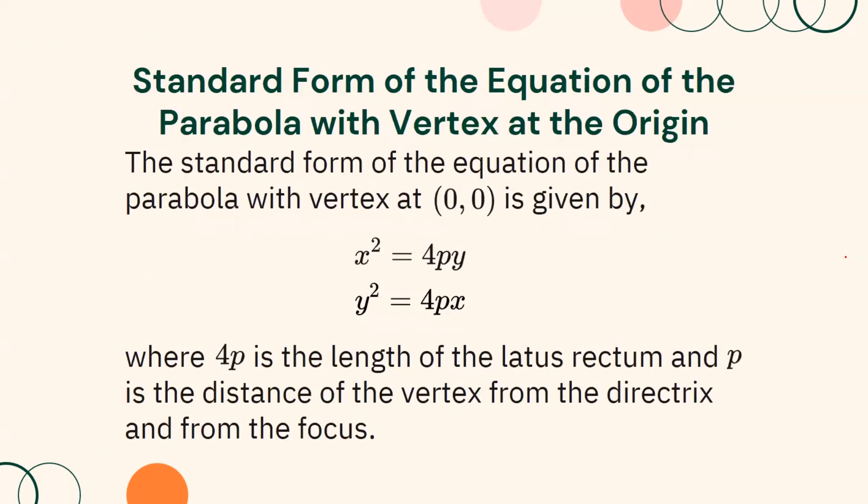Let us discuss the standard form of the equation of a parabola with vertex at the origin. The standard form is given by x² = 4py or y² = 4px, where 4p is the length of the latus rectum and p is the distance of the vertex from both the directrix and the focus.